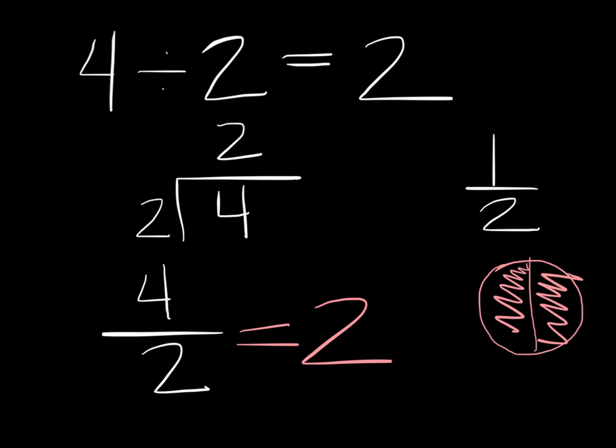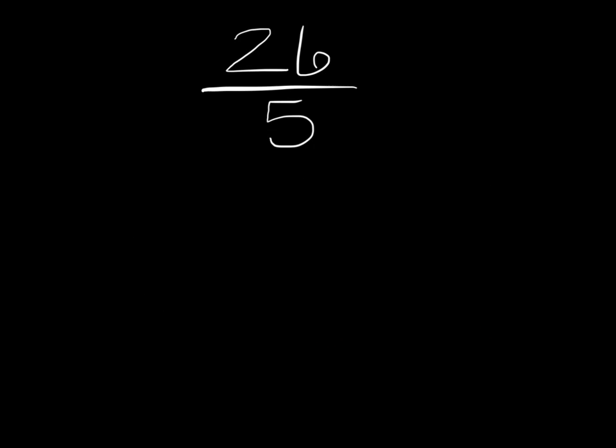So I want you to take a look: if you had this problem right here and you read it as division — 26 divided by 5 — you could think of it like this: 26 divided by 5, and you could solve it. You could do long division. When we look at it as a fraction, you're counting all the fifths and seeing how many of these fifths fit into 26.